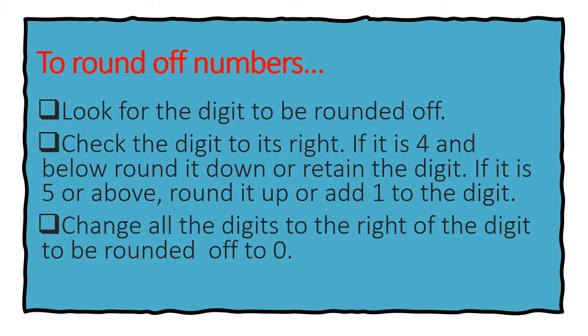If it's 4 and below, round it down or retain the digit. If it is 5 or above, round it up or add 1 to the digit. Change all the digits to the right of the digit to be rounded off to 0.